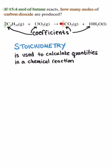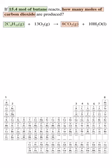There are 8 moles of carbon dioxide for every 2 moles of butane, or 4 times as much carbon dioxide. In this problem we are trying to solve for the moles of carbon dioxide and we are given the quantity of butane.